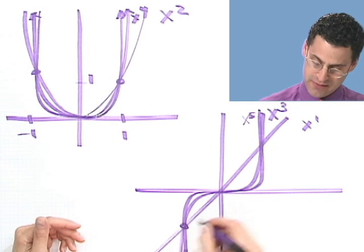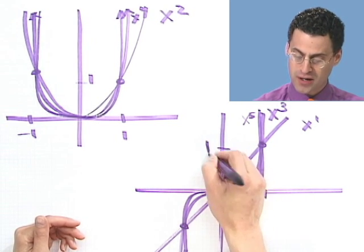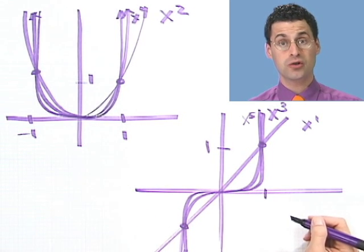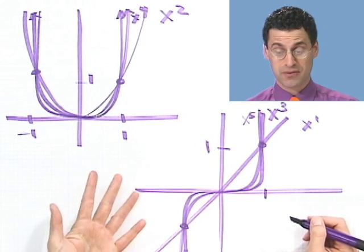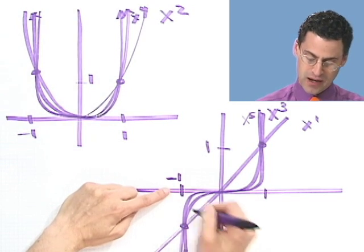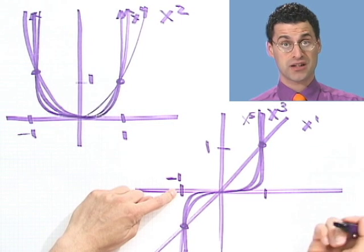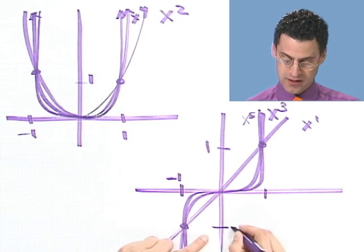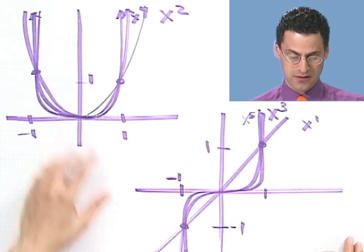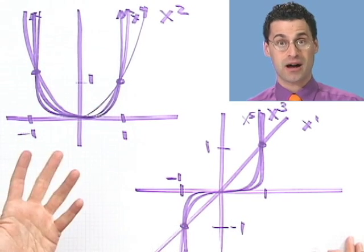Again, notice that all the odd-degree curves have two points in common. At x = 1, the value is 1, because 1 to the first, 1 cubed, or 1 to the fifth always gives 1. And if you plug in -1, then -1 to the first, -1 cubed, or -1 to the fifth always gives -1. Those points are always in common with all the basic odd-degree curves, just as with the even power ones.